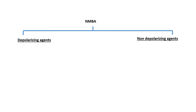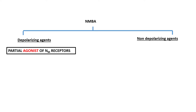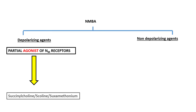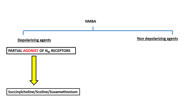Neuromuscular blocking agents or peripherally acting skeletal muscle relaxants may be classified into two: namely the depolarizing agents and the non-depolarizing agents. The depolarizing agents are partial agonists of the NM receptors, the nicotinic receptors. There is only one example for a depolarizing agent and that is succinylcholine.